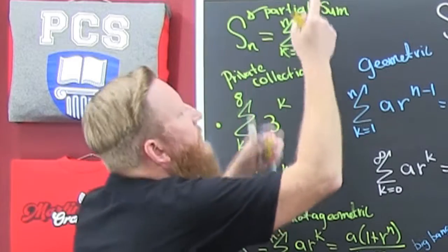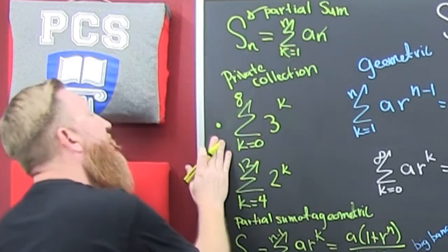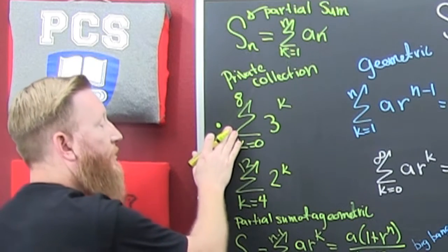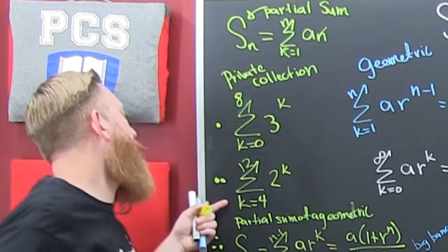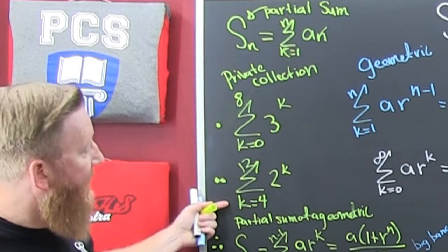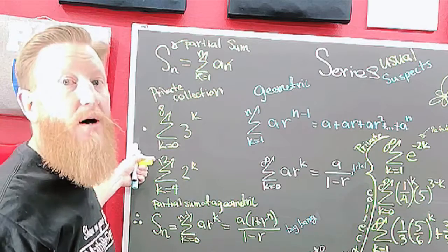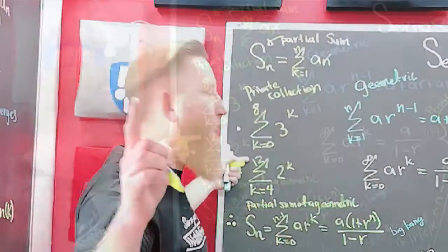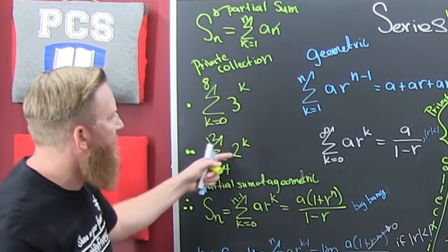In my private collection, you can see me work this example — that's the sum of the first nine terms of 3 to the k. You can see me work this example too — that's the sum of the first nine terms from k equals 1 to 12. That one will also discuss re-indexing so that we can look at the partial sums of these geometrics.